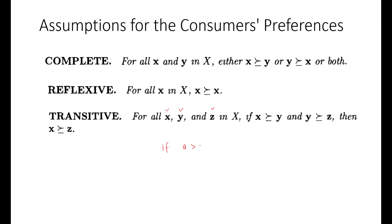This is analogous to: if a > b and b > c, then a > c. More precisely, if a is at least as much as b and b is at least as much as c, then a is automatically at least as much as c. Note that these are consumption bundles, and each bundle contains the same commodities but different amounts of each good.